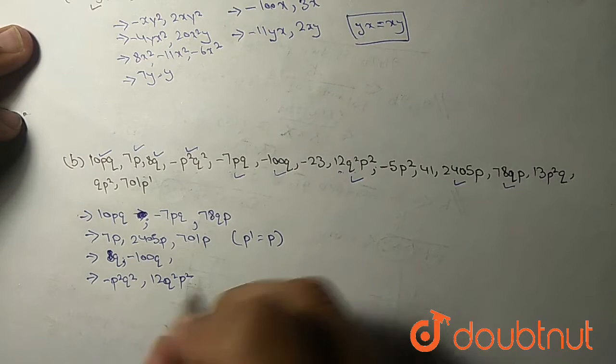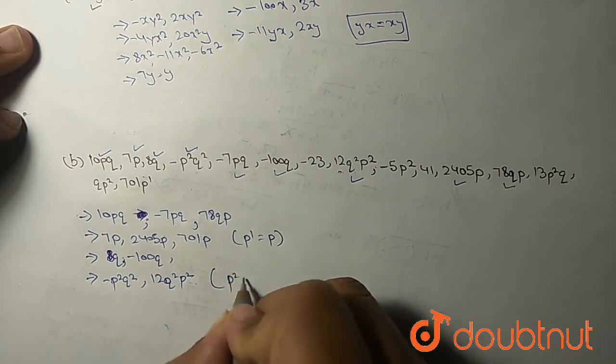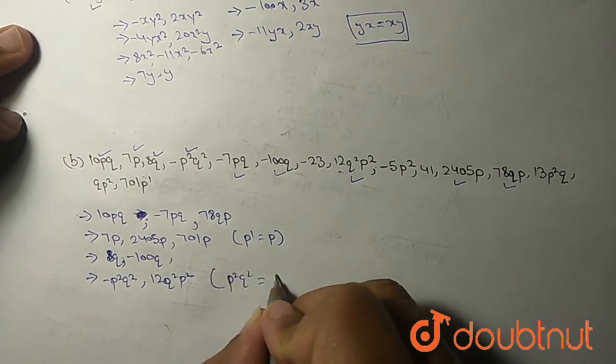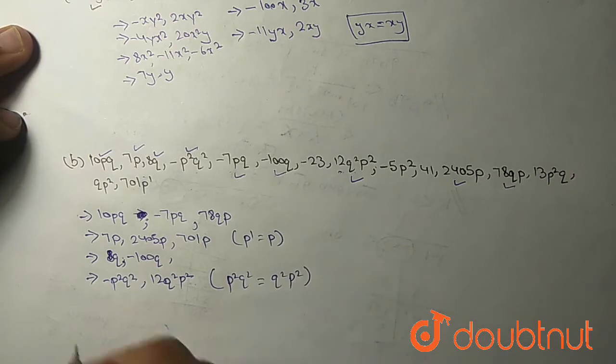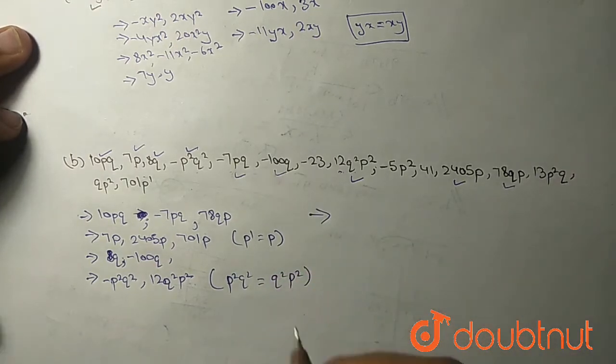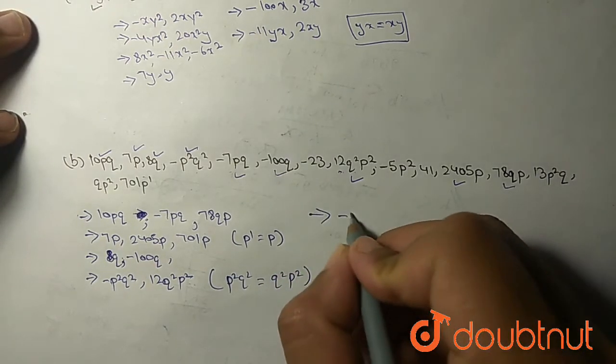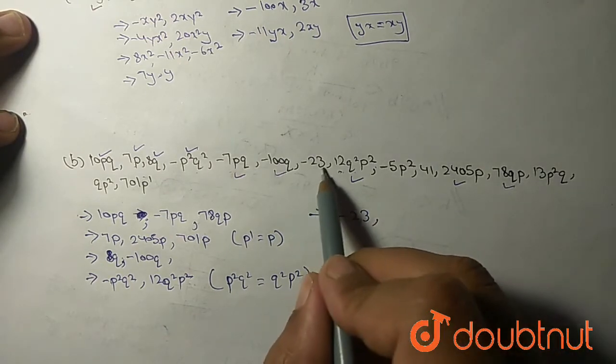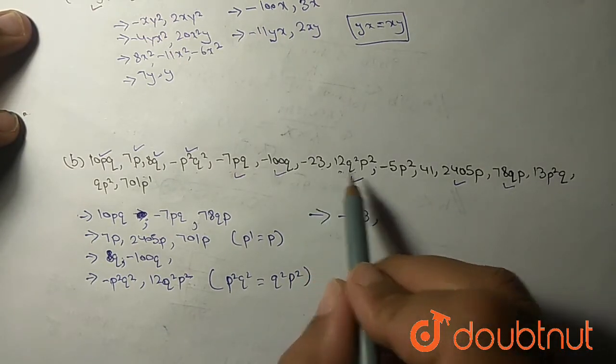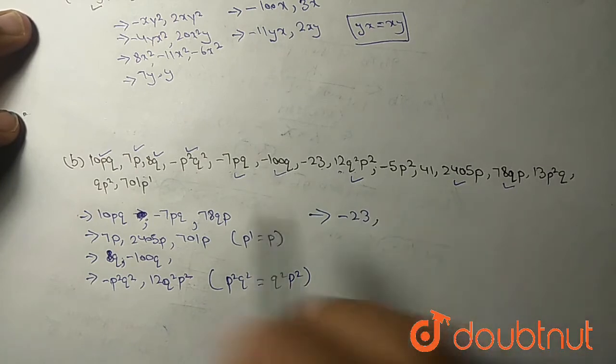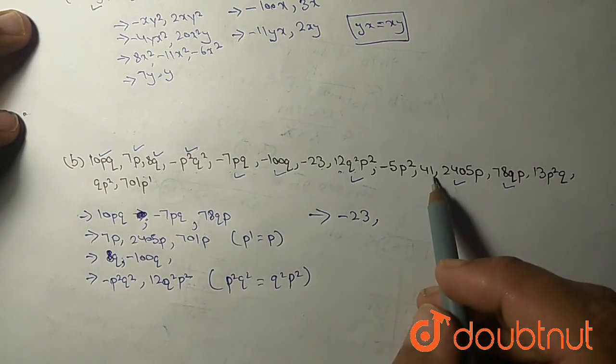Next move forward. Minus 23, there is no p, no q. So we will find is there any number which has no p, no q? Yes, 41 has a number which has no any variable.